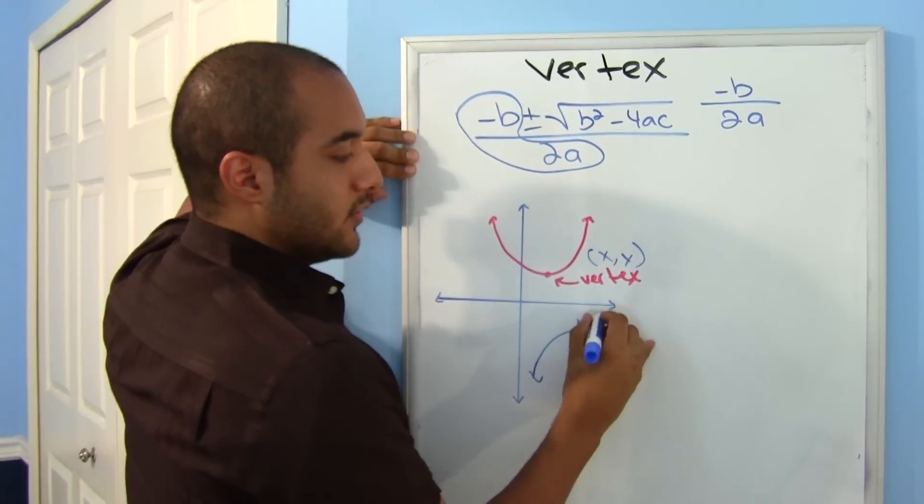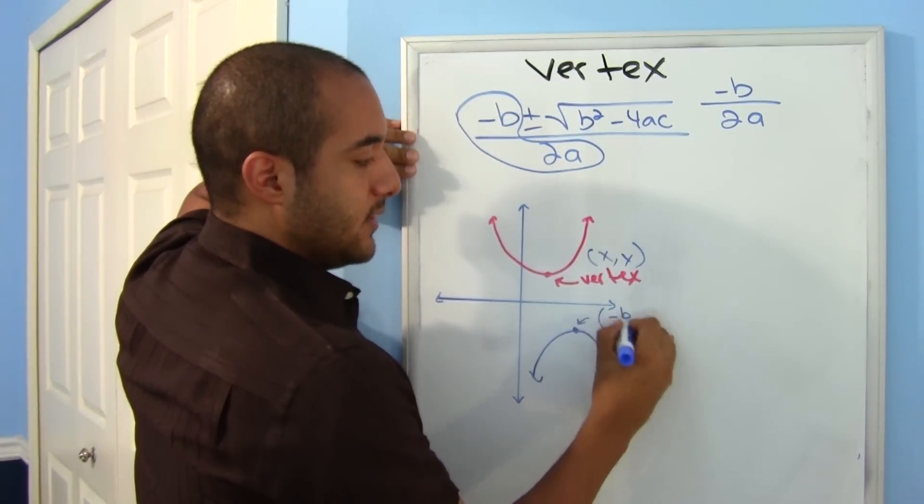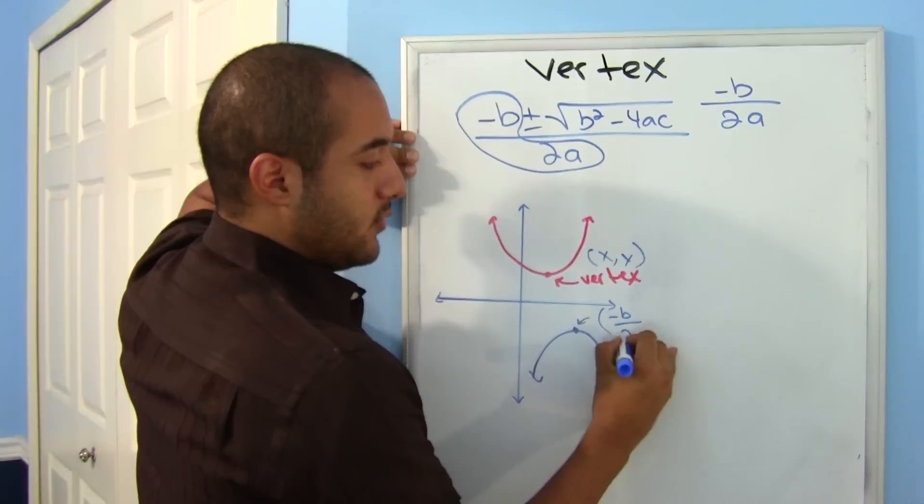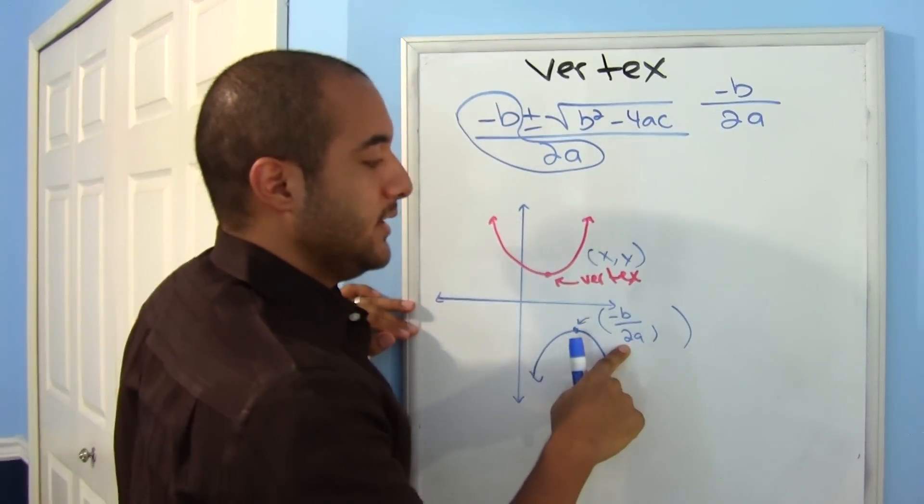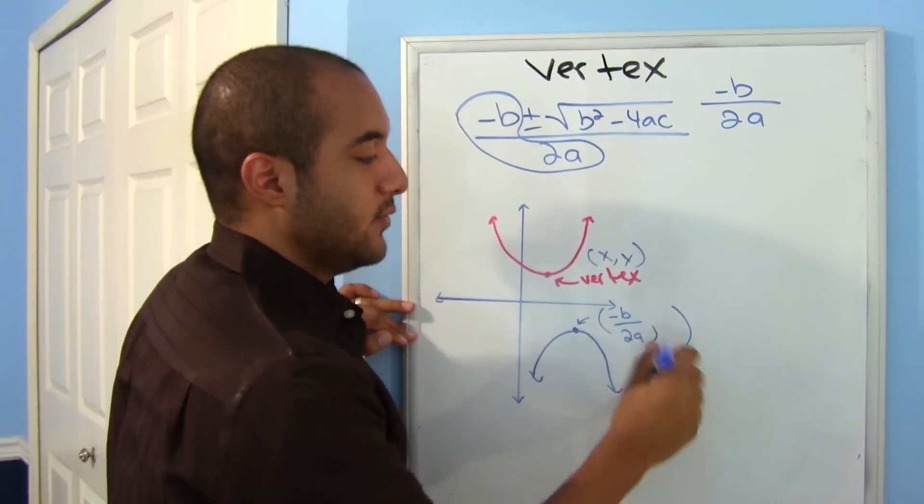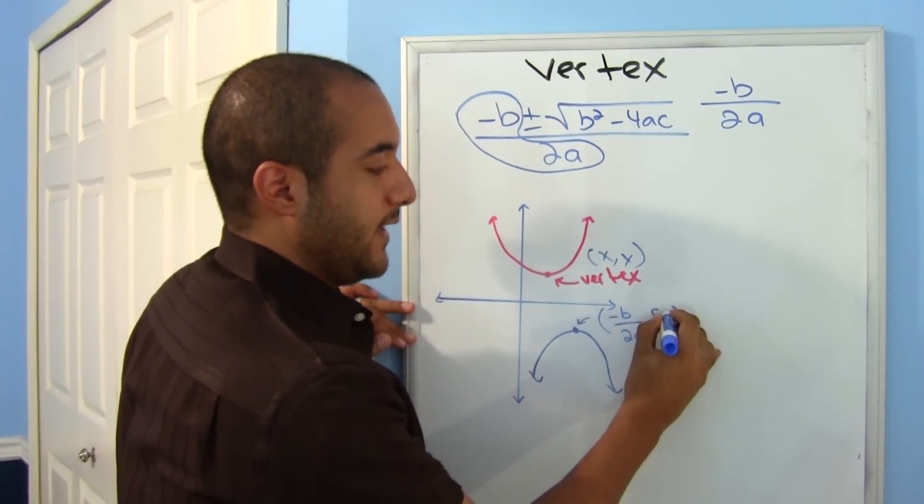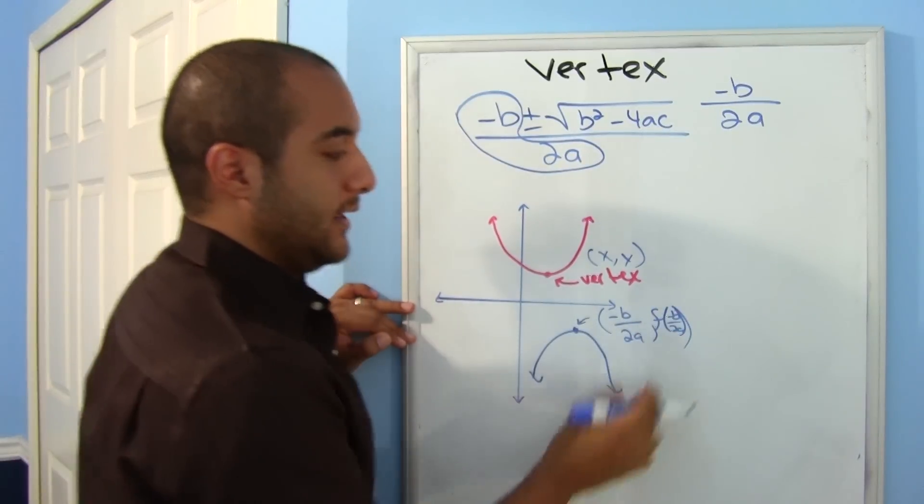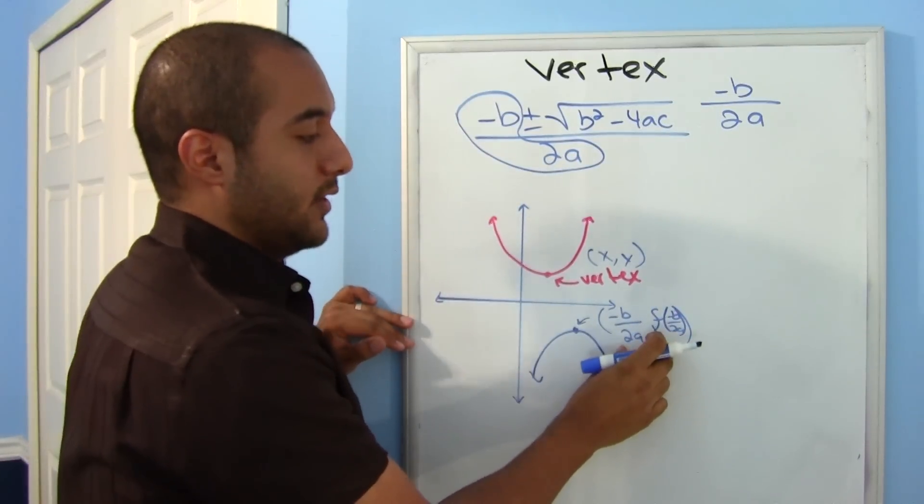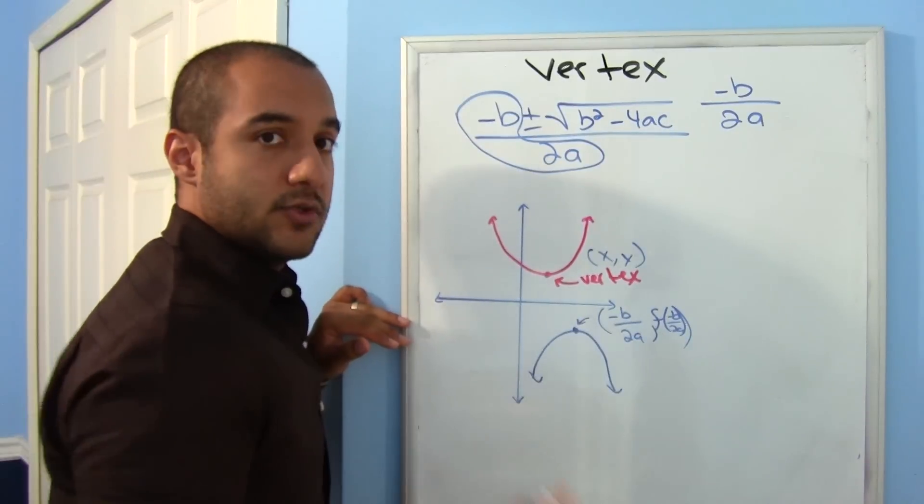So your vertex, your first coordinate, your x-coordinate is going to be that. Once you have your x-coordinate, all you have to do is put that back into the equation and you'll find out what your y is. So you just put it back in and it'll tell you what your y is. Let's go ahead and try one out.